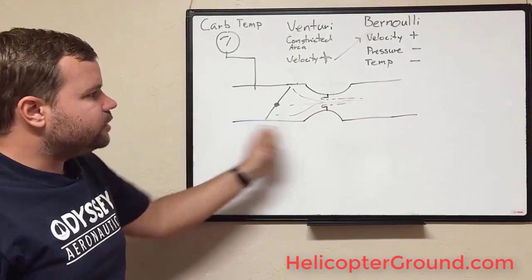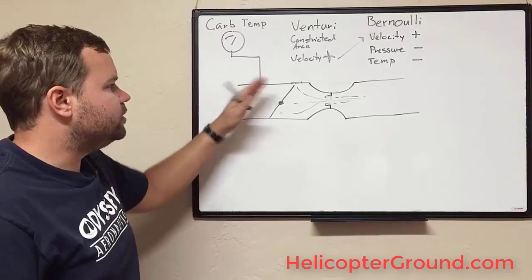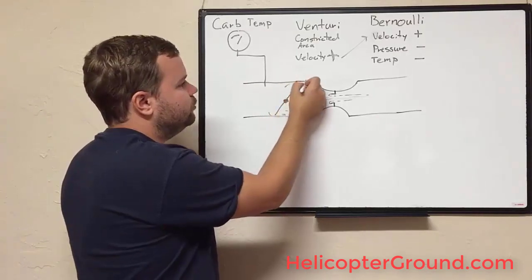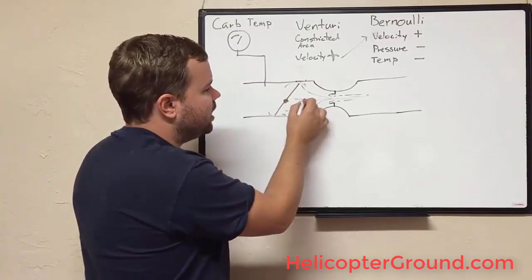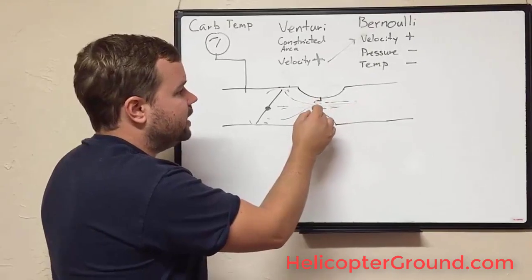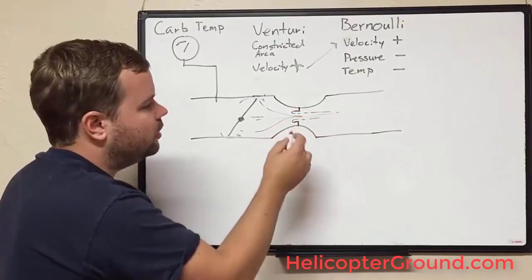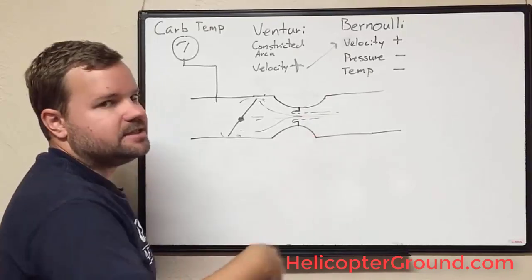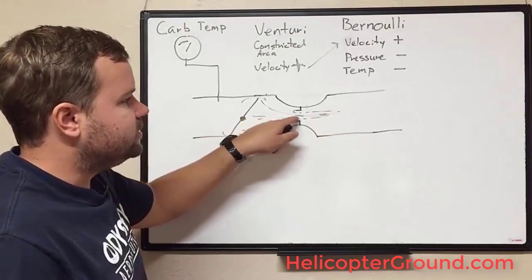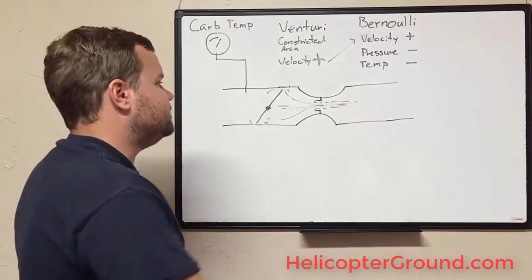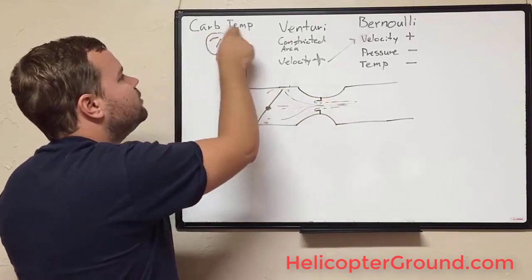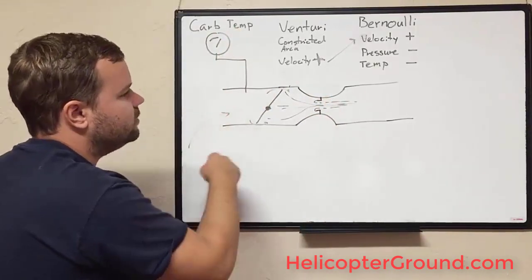When the throttle is mostly closed, you get a pressure drop as air goes through the butterfly valve, which causes a temperature drop. Then the air goes through a Venturi — another temperature drop. Also, fuel being sprayed in atomizes and evaporates, causing a third temperature drop. So you have three things decreasing the temperature of your air, which means especially in the Venturi area you can get ice starting to build up.